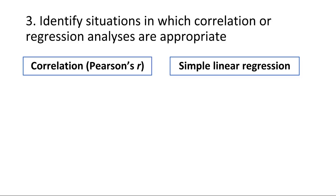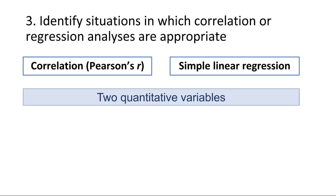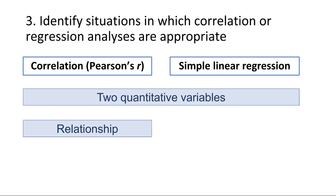The third learning objective is to identify situations in which correlation or regression analyses are appropriate. In this course, the only correlation we're covering is Pearson's r, and the only type of regression is simple linear regression. Both are used with two quantitative variables. If we're given a scenario with two quantitative variables, we need to determine if we're looking for a relationship — in which case we use Pearson's r — or if we're making a prediction, in which case we use simple linear regression.